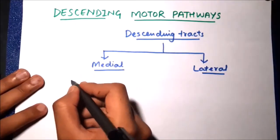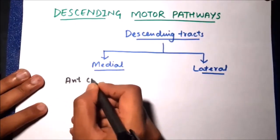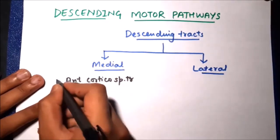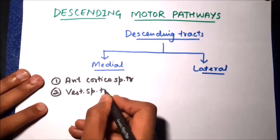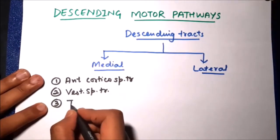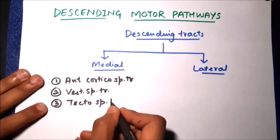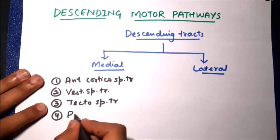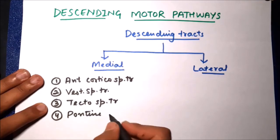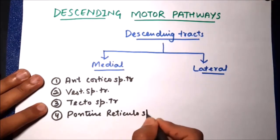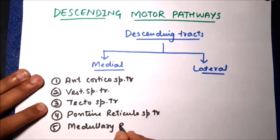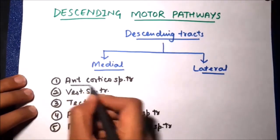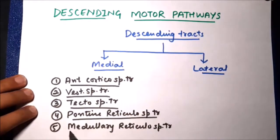In the medial descending tracts we have five tracts. The first is the anterior corticospinal tract. The second is the vestibulospinal tract, which runs between the vestibular nucleus and the spinal cord. The third is the tectospinal tract. The fourth is the pontine reticulospinal tract and the fifth is the medullary reticulospinal tract.